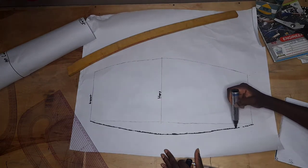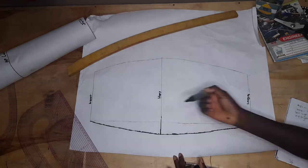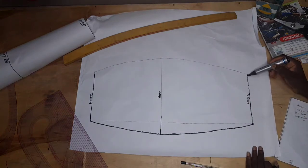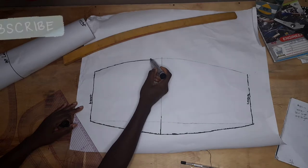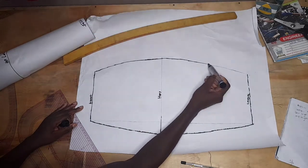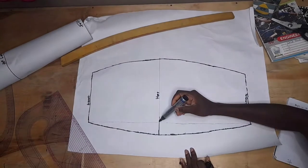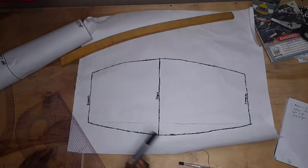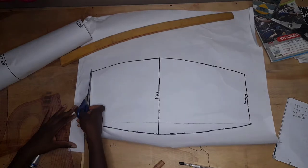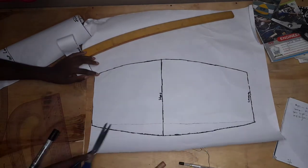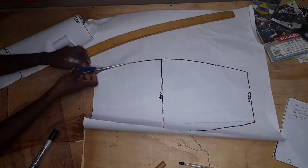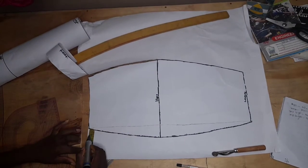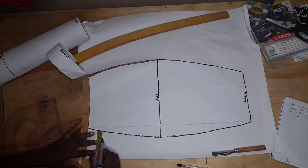So mine isn't that curved, so I won't be using any darts. But before you cut it, make sure you add your zipper allowance, one inch or one point five inches. That's where you'll be adding your zipper allowance. It's also called the center back.